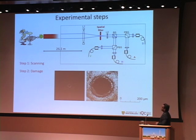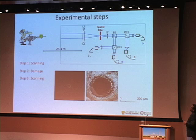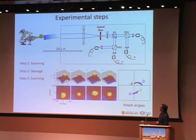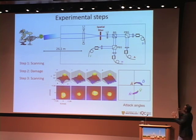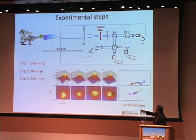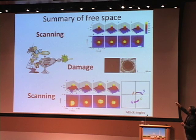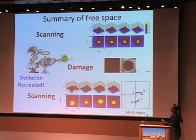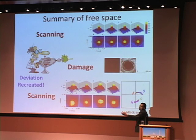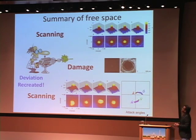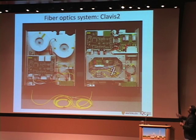Then we went back to the scanning step. With the larger pinhole, light can again be sent at different angles, the four detectors vary differently, and the four attack angles have been recreated. In summary: we first showed the system was perfectly secure and characterized, then we created damage — a deviation — and made the system insecure. This is an example of an eavesdropper sending high-power light from the channel to create a deviation that makes the system insecure.